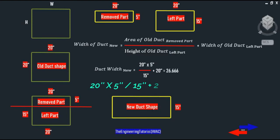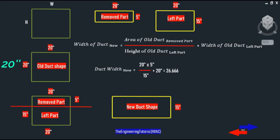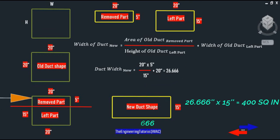So: 20 inches times 5 inches divided by 15 inches, plus 20 inches, equals 26.666 inches. As you can see, we've decreased the height of our old square duct from 20 inches to 15 inches and increased the width, changing its shape from square to rectangular.